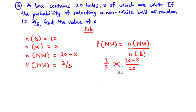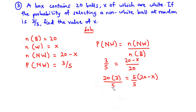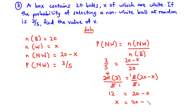Now we cross multiply: 20 times 3 equals 5 times (20 minus X). Dividing through by 5: 5 goes into 20 four times, so 4 times 3 is 12, giving us 12 equals 20 minus X. Transposing negative X to the left-hand side: 20 minus 12 equals X, and therefore X is equal to 8.